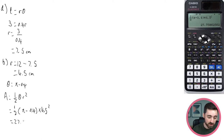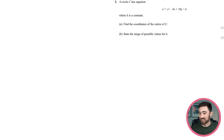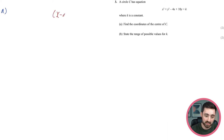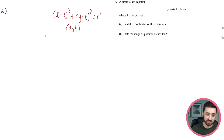Question 3. A circle C has equation x squared plus y squared minus 4x plus 10y equals k. To find the centre, complete the square on the x terms and y terms. The target form is (x minus a) squared plus (y minus b) squared equals r squared, from which the centre is (a, b).